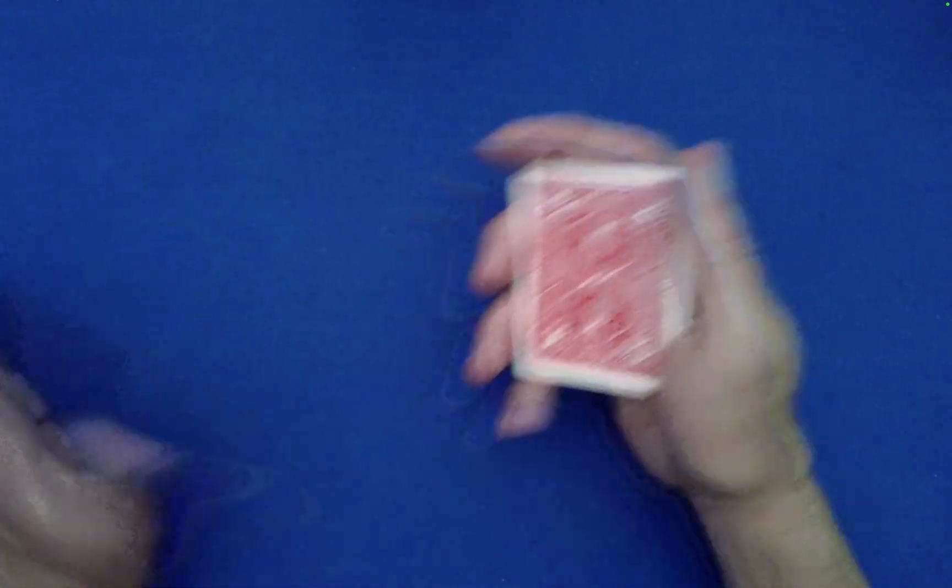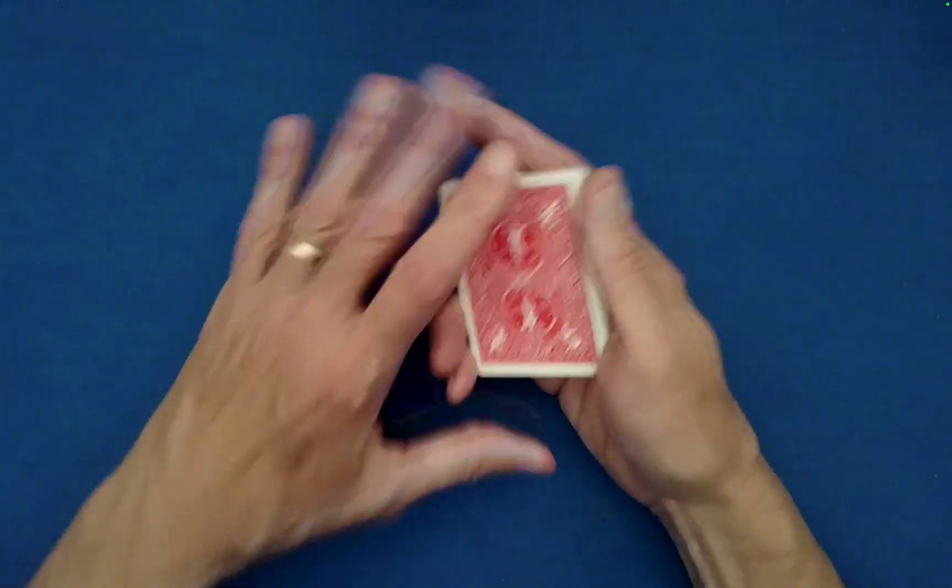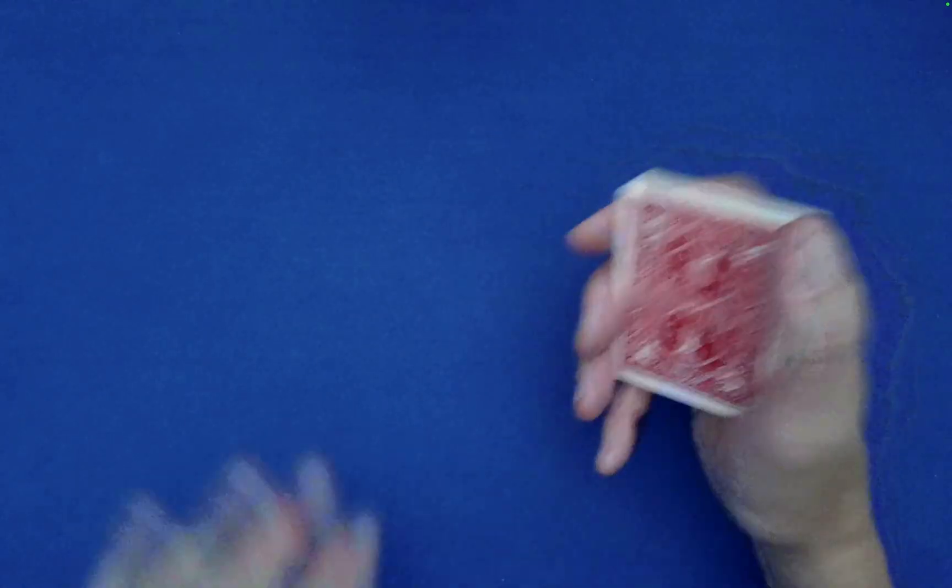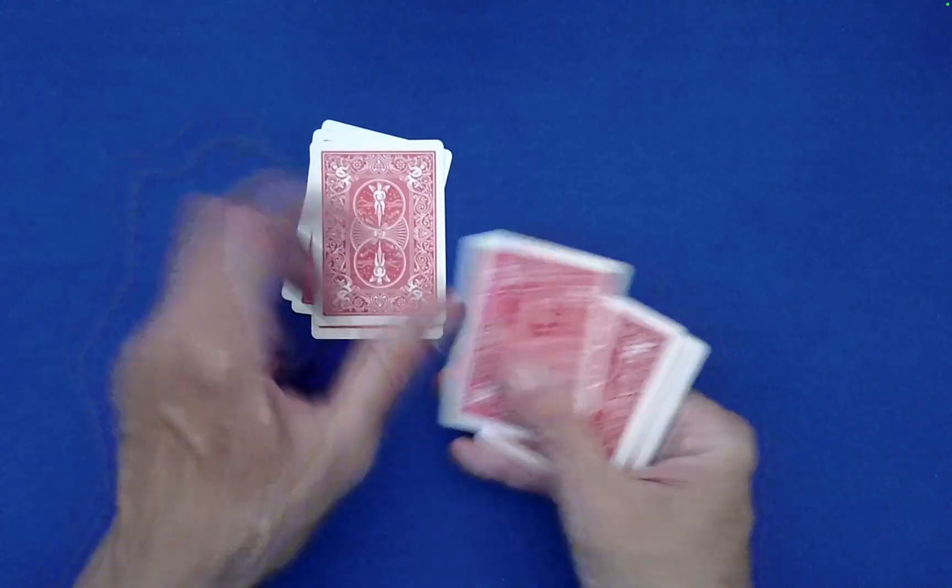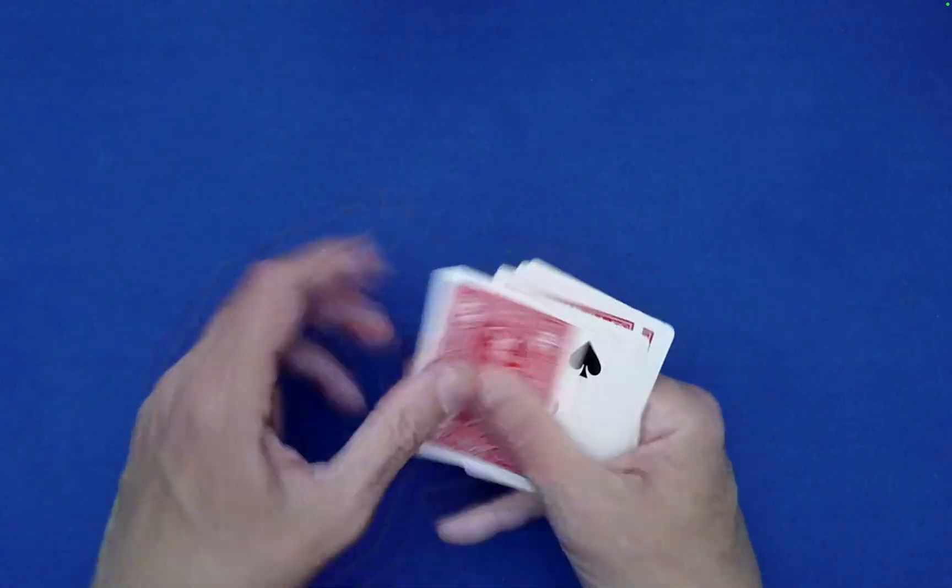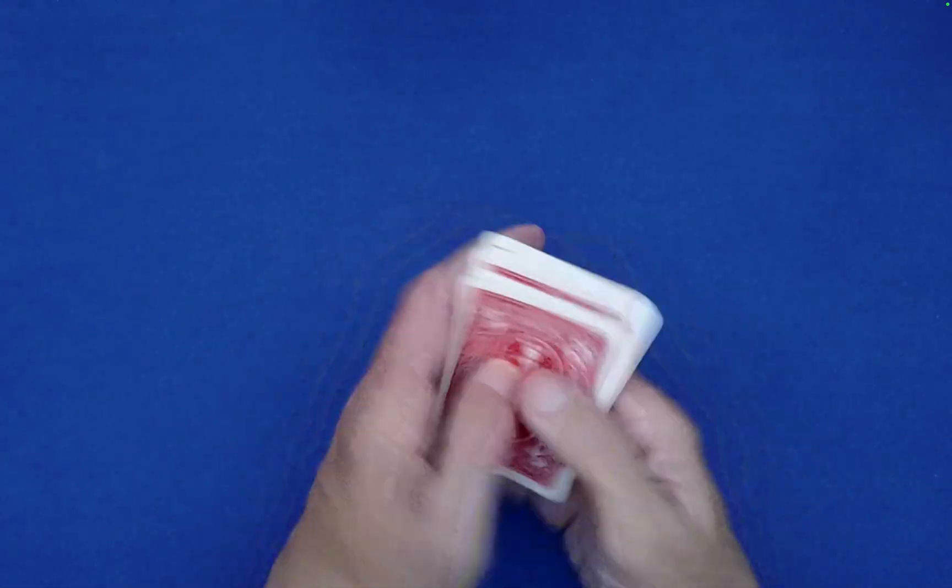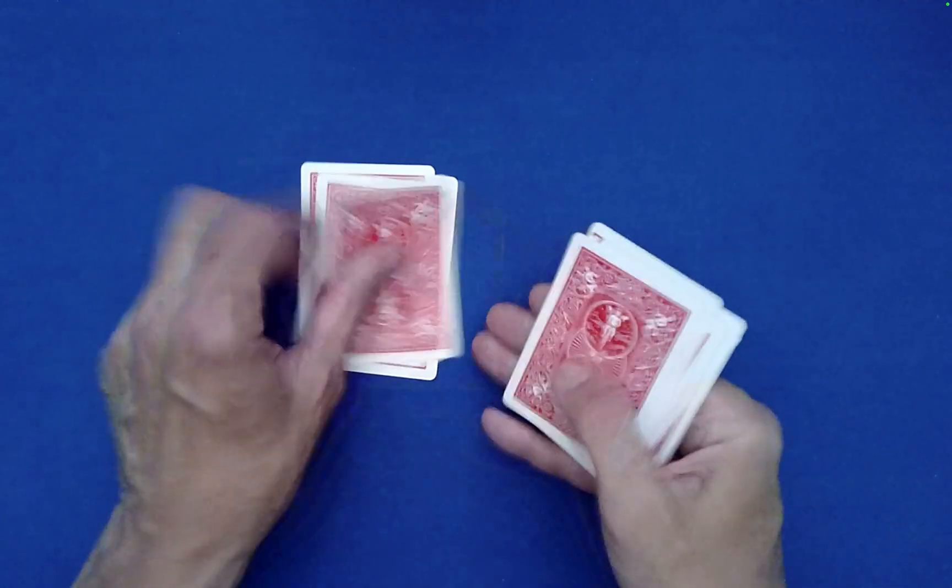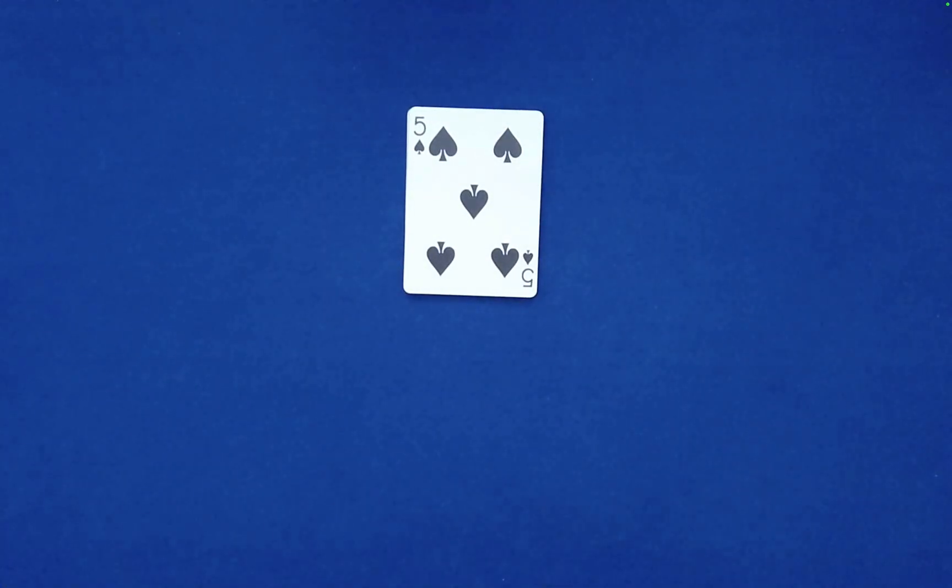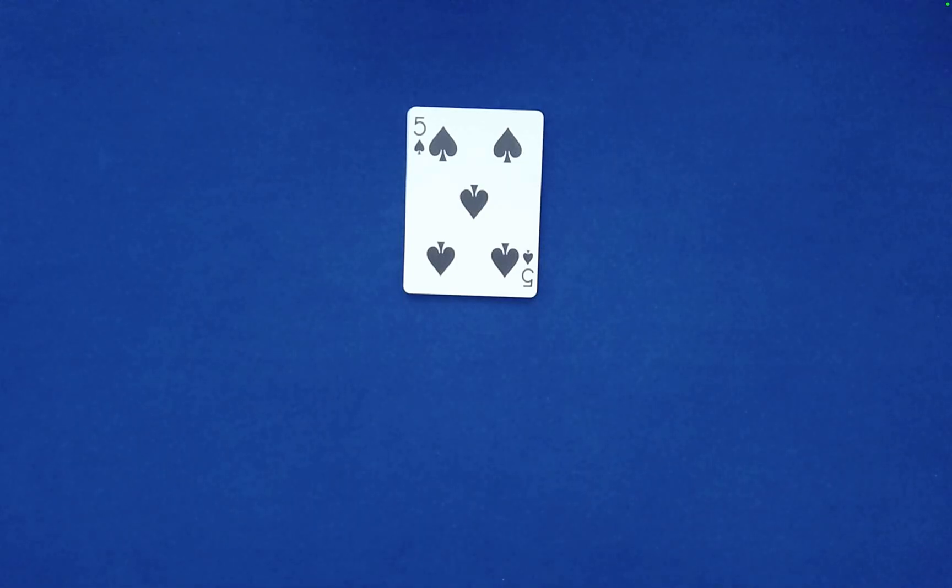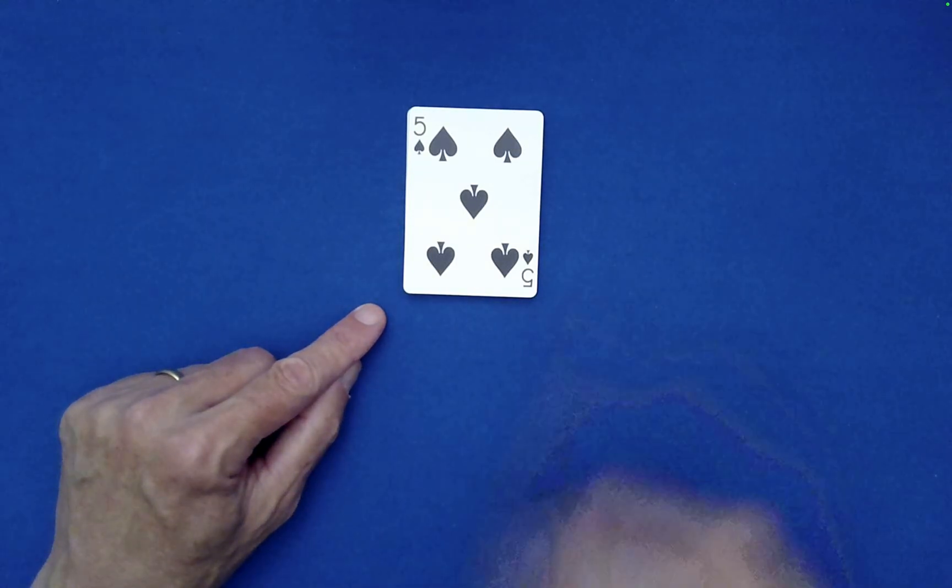Okay, and stack that on top. Do that as many times as you like, and then because of the positioning of their card, when you spell out seven of diamonds, S-E-V-E-N-O-F-D-I-A-M-O-N-D-S, it is guaranteed to bring their noted card to the top every single time.